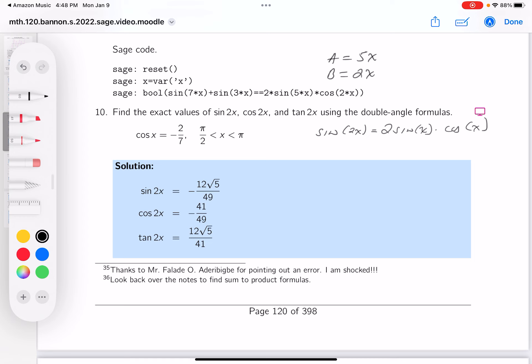And let's write the cosine of 2x down. The cosine of 2x can be written as cosine squared x minus sine squared x. That's one possibility. We could also write it as 2 cosine squared x minus 1, or we could write it as 1 minus 2 sine squared x.